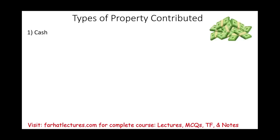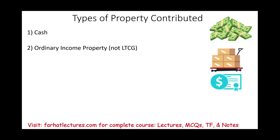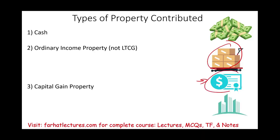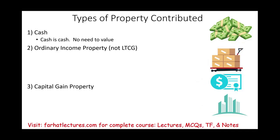Starting with types of contributions: you can contribute cash — that's easy. You can contribute ordinary income property, which is not long-term capital gain property, and this includes inventory and also stocks and bonds held short-term. You can also contribute capital gain property, which includes stocks and bonds held long-term and business assets — Section 1231 property, which is real estate used in business. When you contribute cash, the value is straightforward — cash is cash, no need to value it.